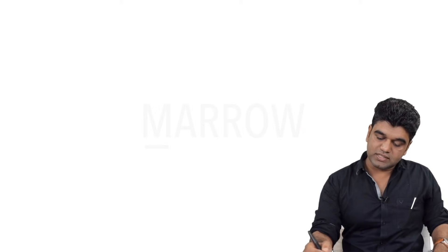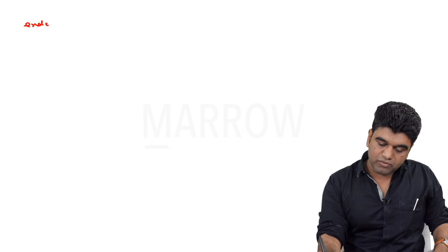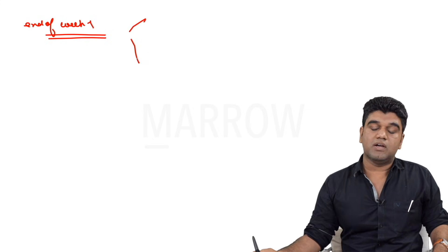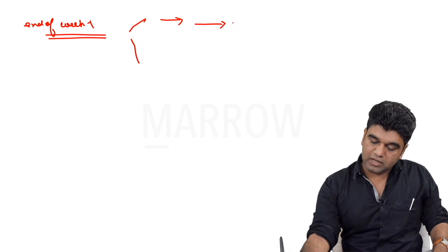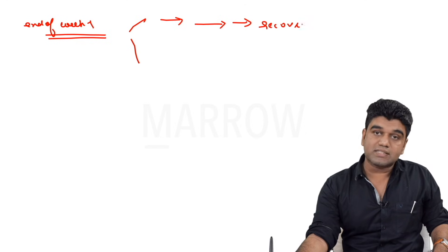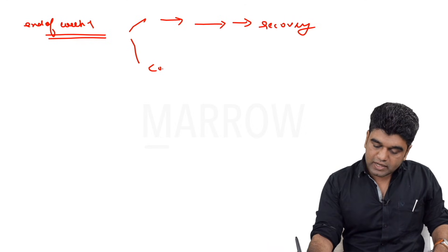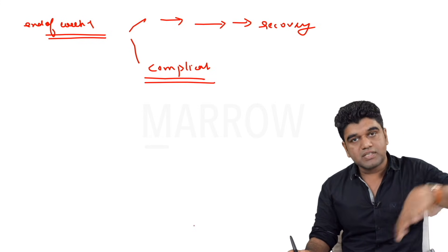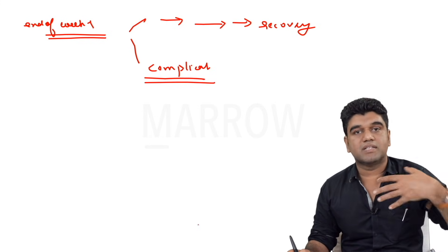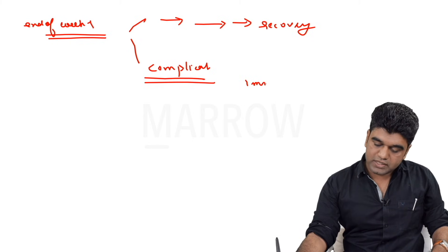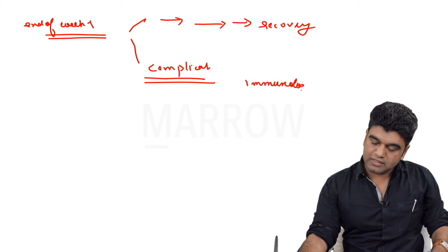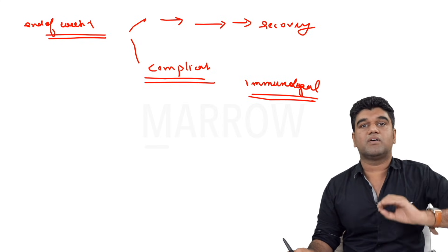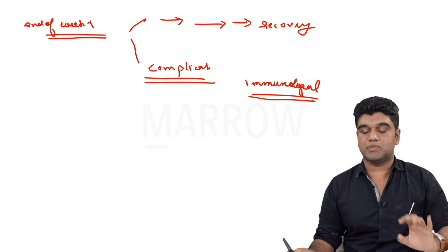Serology wise it's very difficult because none of the tests have been found very useful except for IgM lepto which takes more than seven to eight days to become positive. So in that time period I've already made a diagnosis and started treating. The problem with leptospirosis is that at the end of week one there are two possibilities - one is complete clinical recovery, or the patient can go into complications. Most of these complications have an immunological basis.